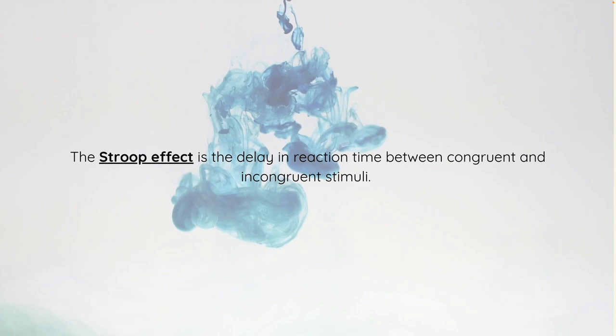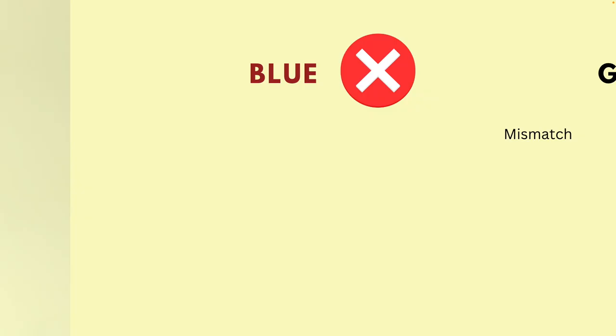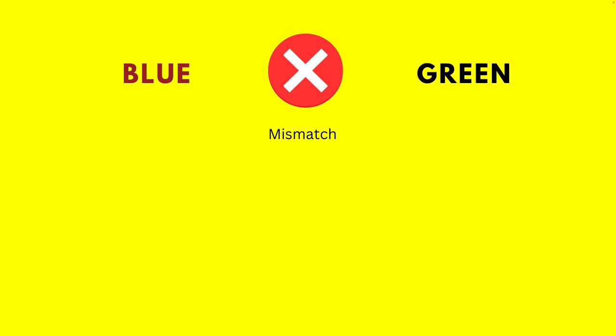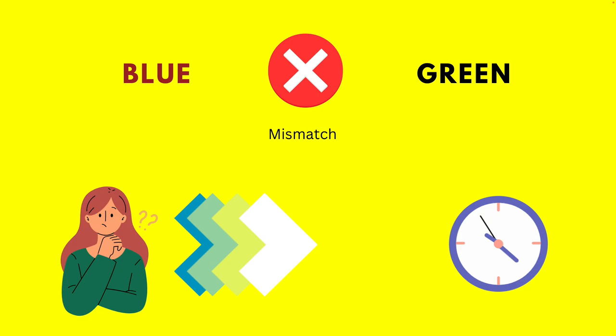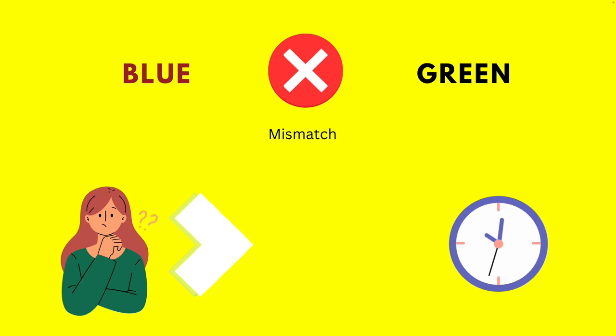The Stroop effect is the delay in reaction time between a congruent and an incongruent stimulus. It has been widely used in clinical practice and investigations. This effect occurs when there is a mismatch between the name of the color written and the ink color it is printed in. Participants tend to show a delay — the Stroop effect — when the ink color and the name of the color do not match, i.e., when presented with an incongruent stimulus.